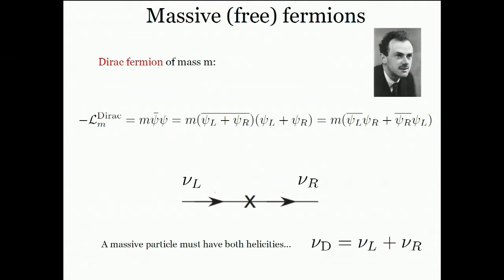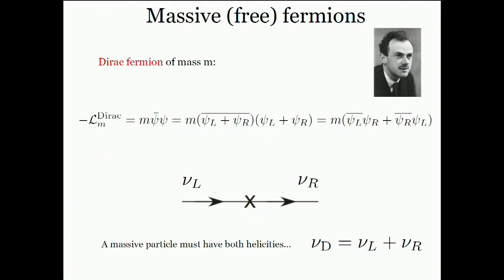Let's see how we can extend the standard model to have massive neutrinos. Let me remind you what a mass for a Dirac fermion is. A mass for a Dirac fermion is simply a term in the Lagrangian which, written in terms of left and right components, links left and right. The mass can be seen as the strength of the transition from left to right.